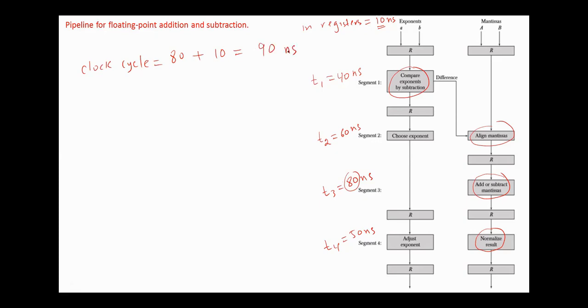An equivalent non-pipeline floating-point add-subtract circuit will have a delay of all these values plus the delay in registers: 40 plus 60 plus 80 plus 50 plus 10, which is 240 nanoseconds.